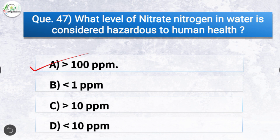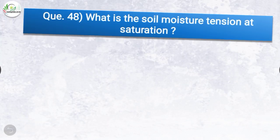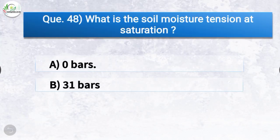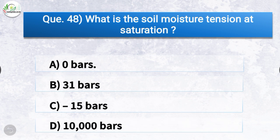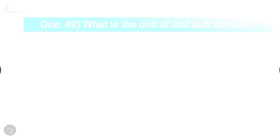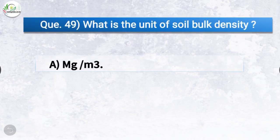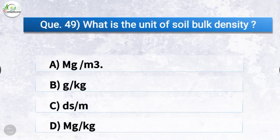Question number forty-eight: what is the soil moisture tension at saturation? The correct answer is option A, zero bars. Question number forty-nine: what is the unit of soil bulk density? The correct answer is option A, Mg per meter cube.